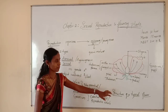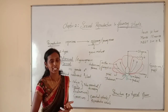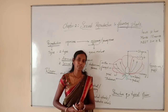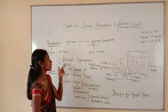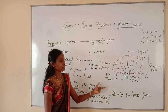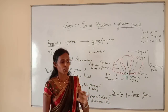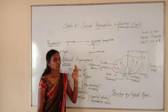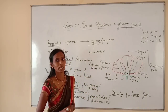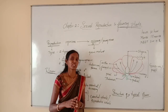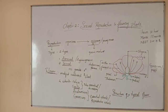So this is all about the structure of a typical flower. In this class I have explained about reproduction, types of reproduction, asexual reproduction, sexual reproduction, the structure of a typical flower, and the importance of flowers. In the next class I am going to explain about the pre-fertilization structures and events. Please make a note of it. Thank you.